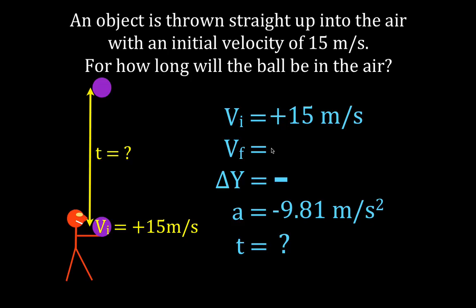This problem can be done two different ways, and I'm going to do both in this video. We want to know the total time, up and down. In the first case, we consider just the time it takes to go up. If we calculate the time to go up, we know the time to come back down is the same, so we multiply by two for the total time. In this first case, the final velocity will be zero meters per second, because before the object starts to come back down, it actually stops.